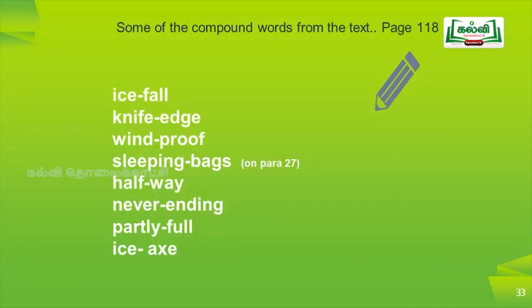Some compound words from your textbook on page 118: icefall, knife-edge, windproof, sleeping bags, halfway, never-ending, partly full, and ice axe. Try to find these compound words in the prose 'The Summit' and identify which paragraph they appear in. For example, 'sleeping bag' can be found in paragraph number 27 of the prose section.